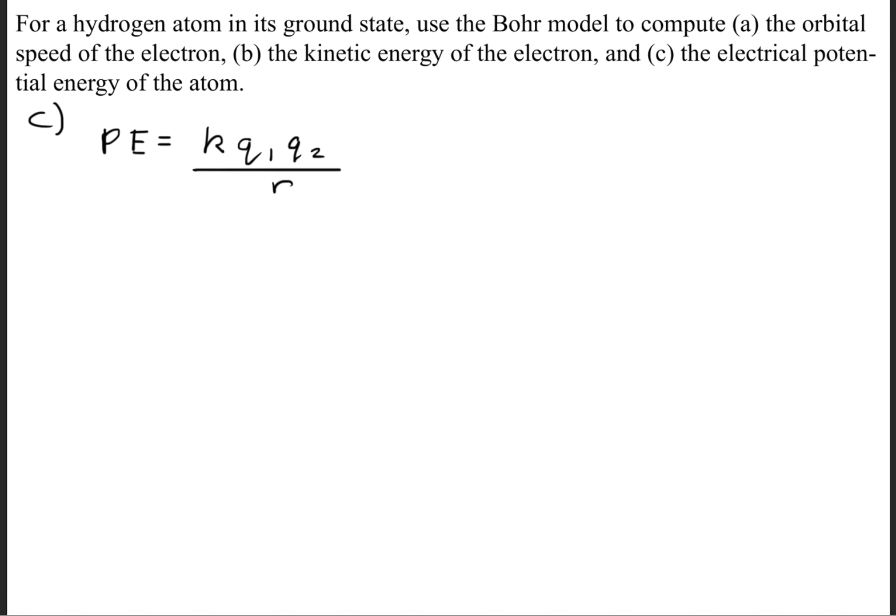In order to solve part C, we'll need to use the potential energy, or the electrical potential energy formula, which is the Coulomb constant times the charge of the first particle times the charge of the second particle, divided by the radius. Again, let's bring up a quick discussion of the hydrogen atom. There are two elementary particles, and we represent that with the symbol E. So we have a proton, and that has a positive charge, and the electron, which has a negative charge.